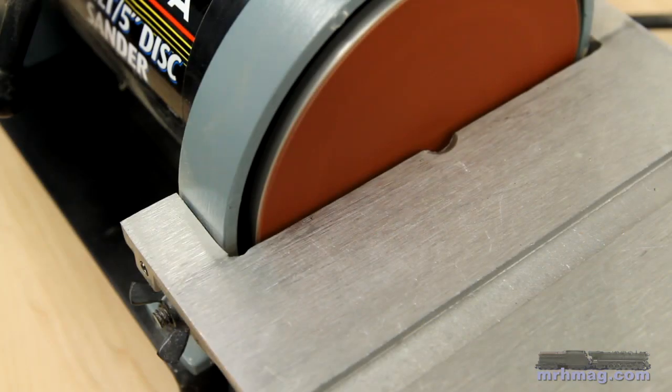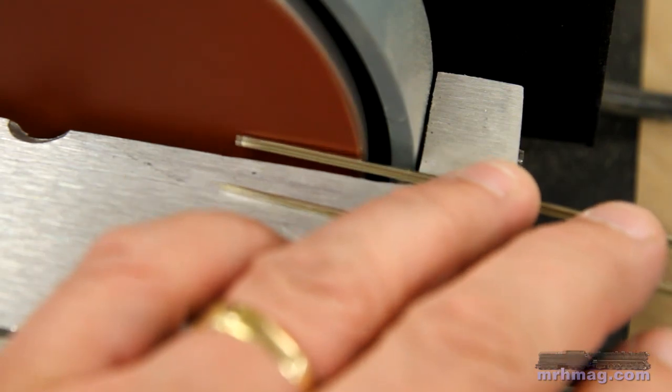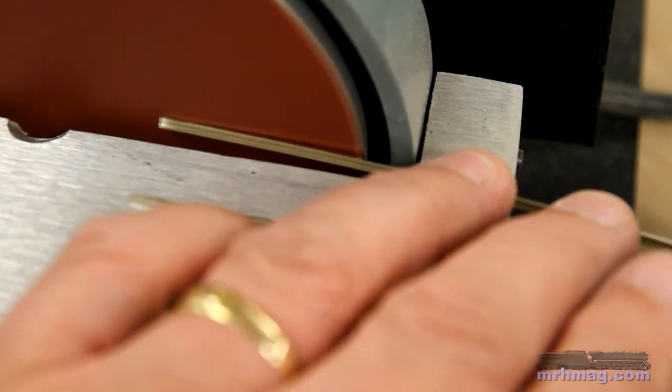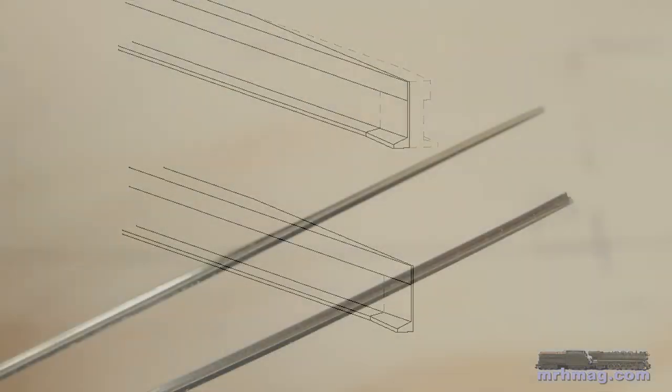I use the five inch disc sander to grind the side of the points flat so they can mate with the stock rails. Be sure to clean up the points with 400 grit sandpaper after grinding them. Burrs or roughness will interfere with the smooth operation of the points.